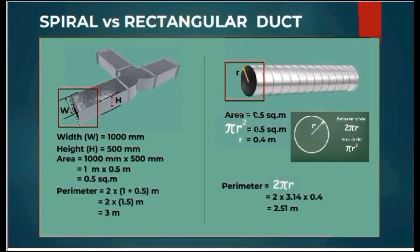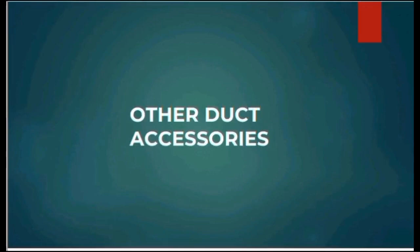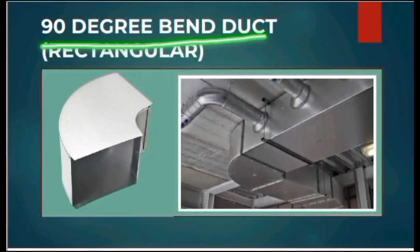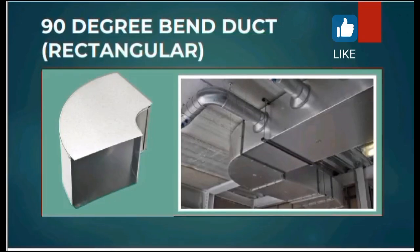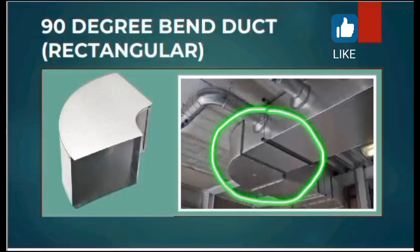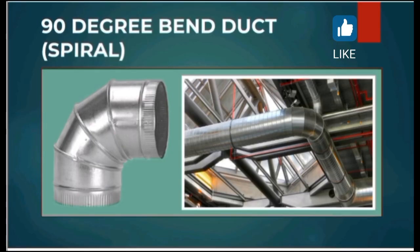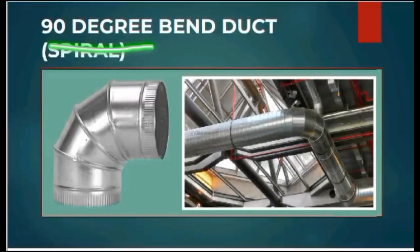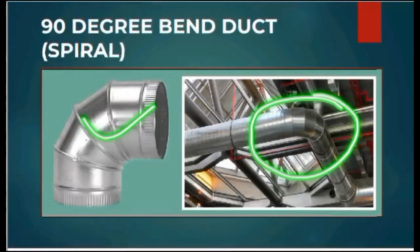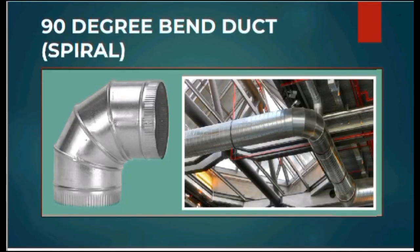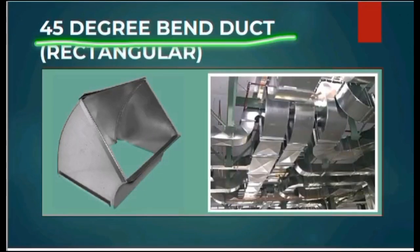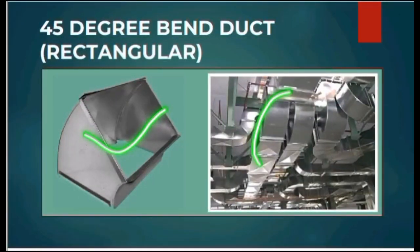Now let's talk about some important duct accessories. First, we have a 90-degree elbow, which is used to change the direction of duct by 90 degrees. Here you can see the installation in a plant. We also have a 90-degree spiral elbow, which is used in spiral duct to change the direction as per requirement in industry. Then we have a 45-degree rectangular elbow to move the duct in a 45-degree direction.